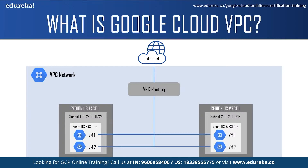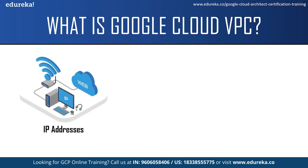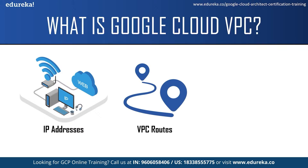Each virtual machine instance in GCP will have an internal IP address and typically an external IP address. The internal IP address is used to communicate between instances in the same VPC network, while the external IP address is used to communicate with instances in other networks or the internet. These IP addresses are ephemeral by default but can be statically assigned. Ephemeral means the IP address will keep changing every time the virtual machine restarts. VPC routes tell virtual machine instances and the VPC network how to send traffic from an instance to a destination, either inside the network or outside of Google Cloud.